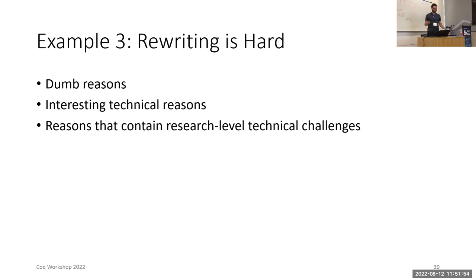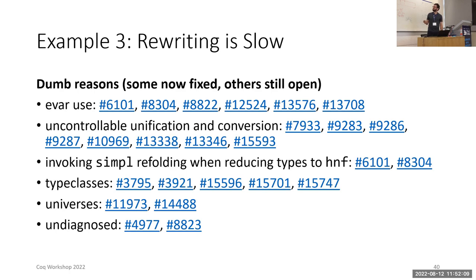The third example that I want to talk about is rewriting. Rewriting is hard for dumb reasons, for interesting technical reasons, and for reasons that contain research-level technical challenges. Here you see a list of reasons that I am calling dumb. All of the numbers are top issue numbers. Some of them are now fixed. Others are still open. You see on the first two lines the pervasive proof engine building blocks, existential variables, and unification and conversion. Rewriting also invokes fixed-point refolding and type class resolution in some cases, another notorious performance bottleneck. In two issues, it is slow because of universes, and in two issues, it is slow for as-yet undiagnosed reasons.